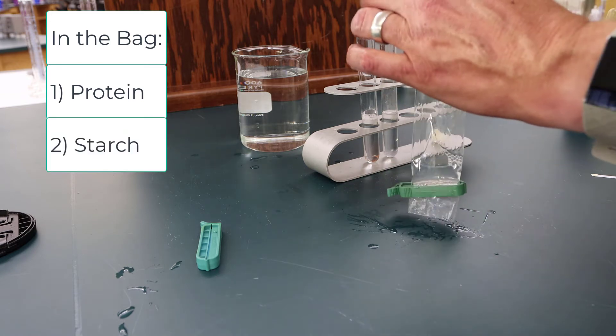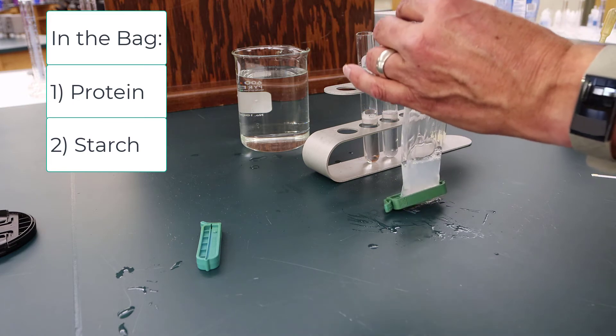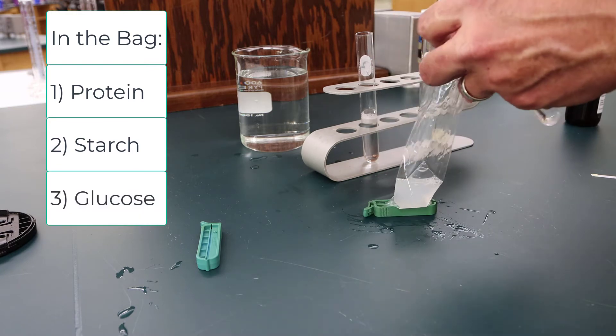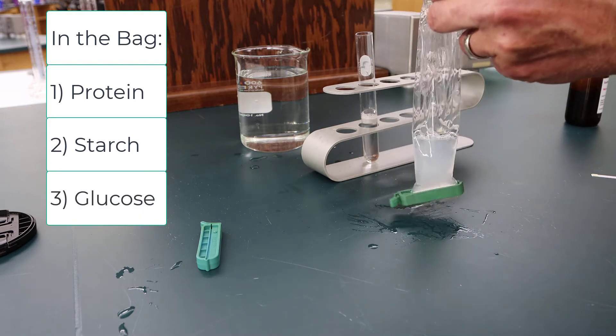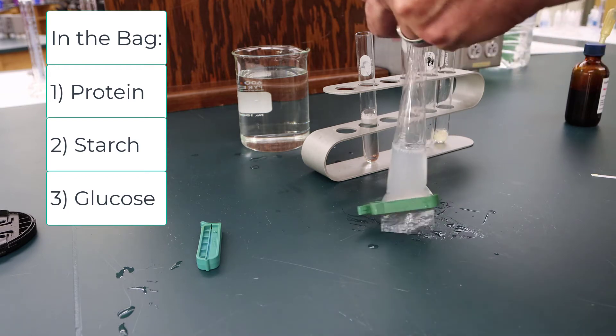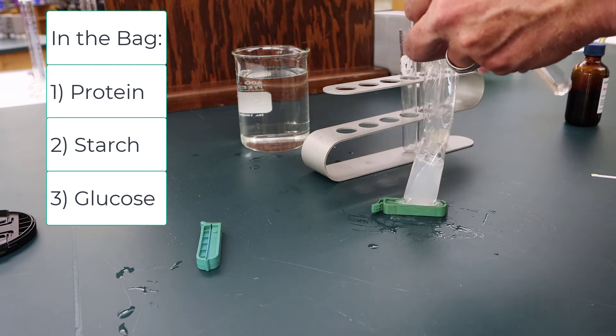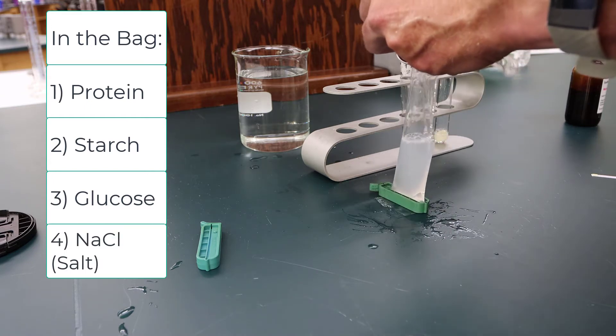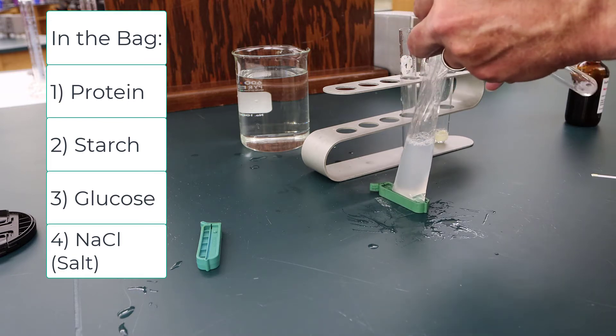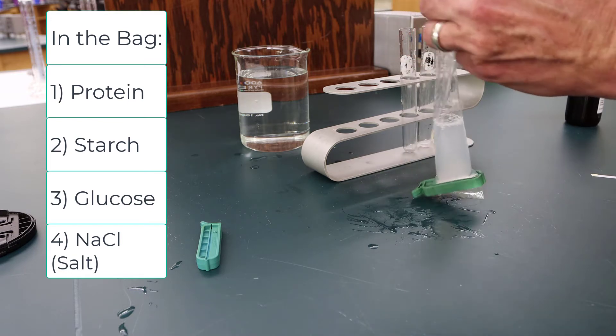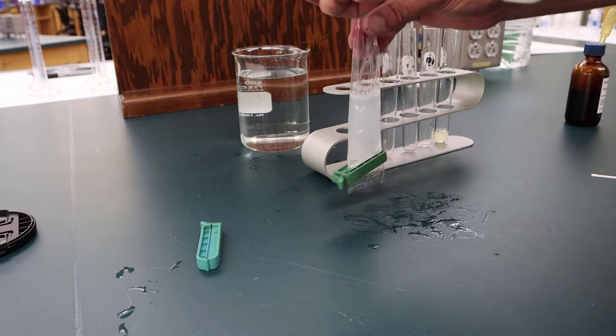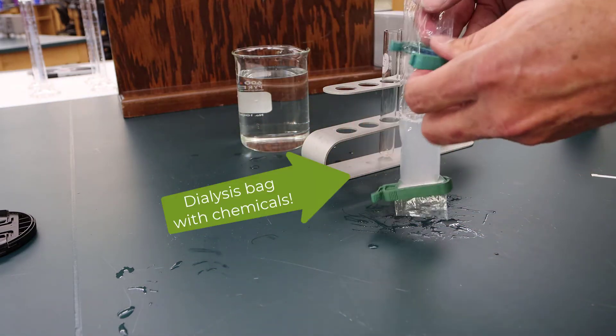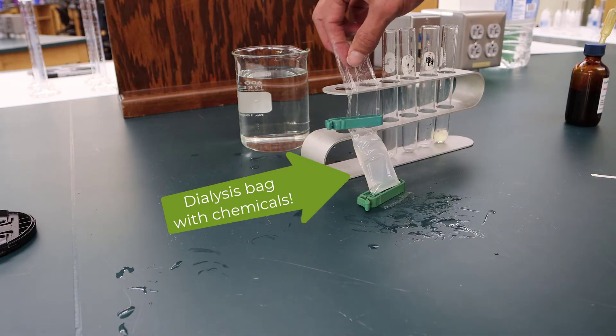Then we're going to put in about 10 milliliters of starch inside the bag, about 10 milliliters of a 1% glucose solution, and about 10 milliliters of a sodium chloride or salt solution. We'll put a clamp on the other end to make it basically a bag that has those components inside.